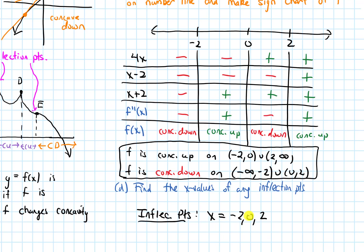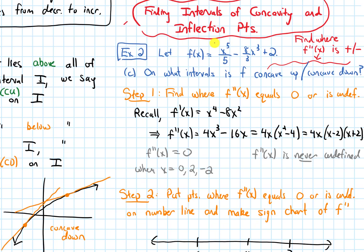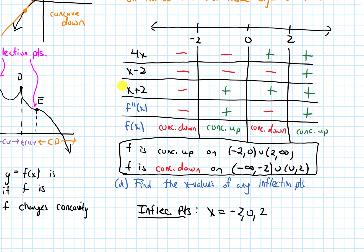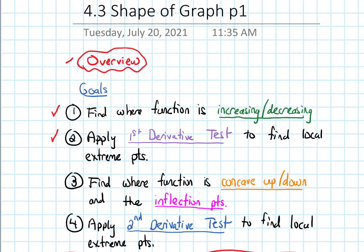There's one important thing to check: we need to make sure the original function is continuous at all of these points, because there has to be a point on the graph for these to be inflection points. Looking at the original function, it's a polynomial, which is definitely continuous everywhere. So the inflection points at x equals negative 2, 0, and 2 are confirmed. With that, we've finished goal 3: finding where a function is concave up or down and its inflection points using the second derivative.